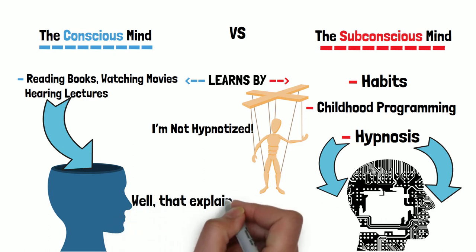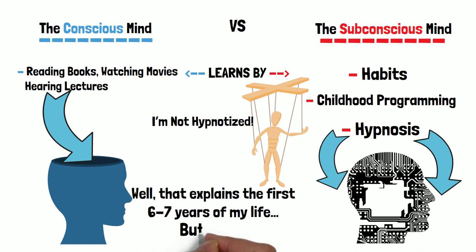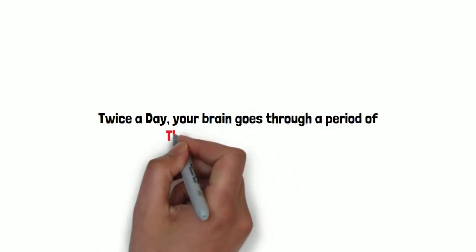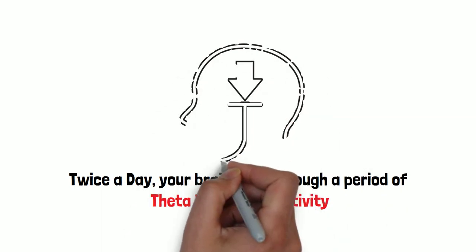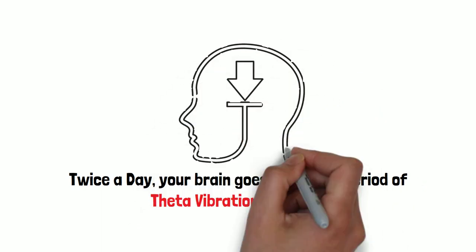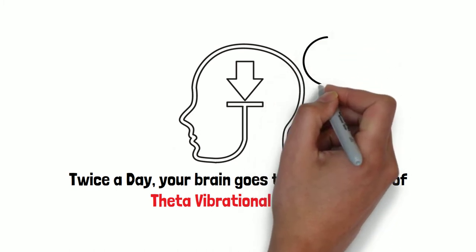The first six or seven years, that brain of a child is predominantly operating in theta hypnosis. But now you're older. Now what do you do? Here's an interesting fact: Twice a day your brain goes through a period of theta vibrational activity. Twice a day your brain is prepared to download information through hypnosis.